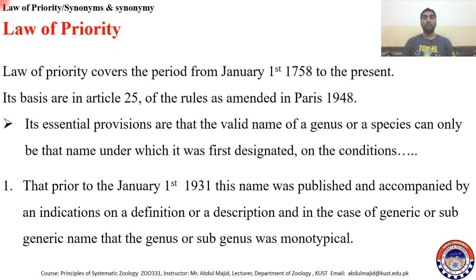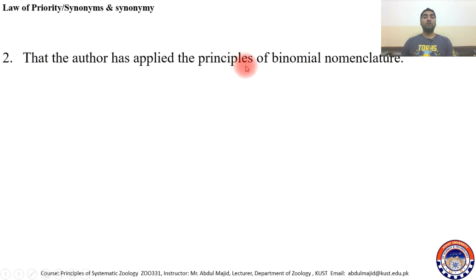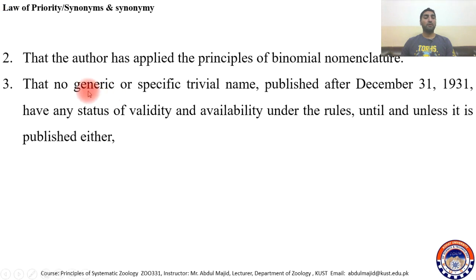In the case of a generic or subgeneric name, the genus or subgenus was monotypical. This is the first condition. The second condition is that the author has applied the principles of binomial nomenclature, meaning at the time of naming, the principles or rules of binomial nomenclature were fully applied. Third, no generic or specific name published after 1931 has any status of validity and availability under the rules until and unless it is published.